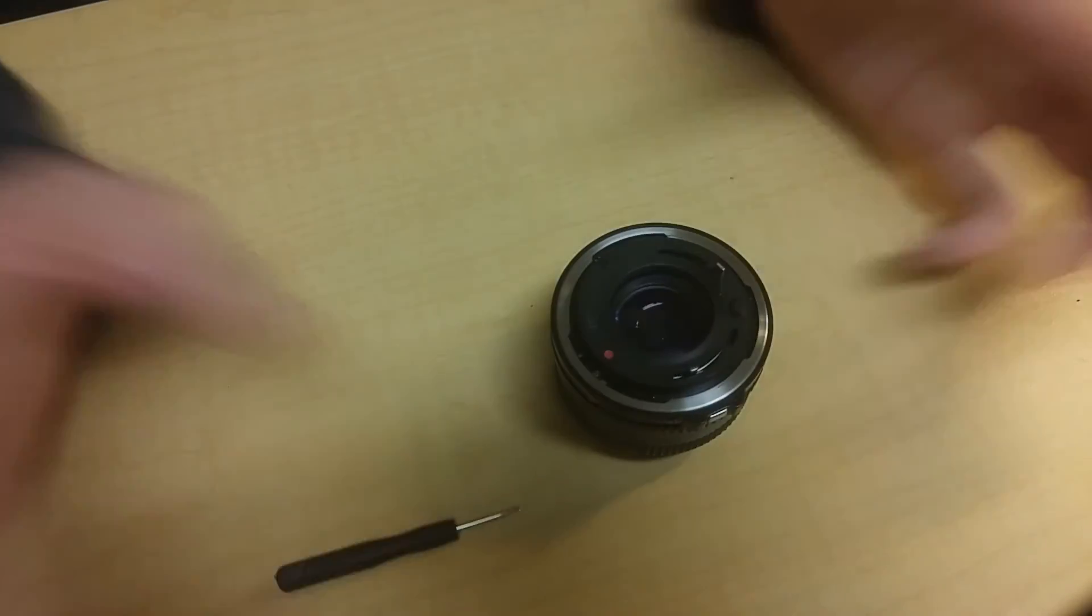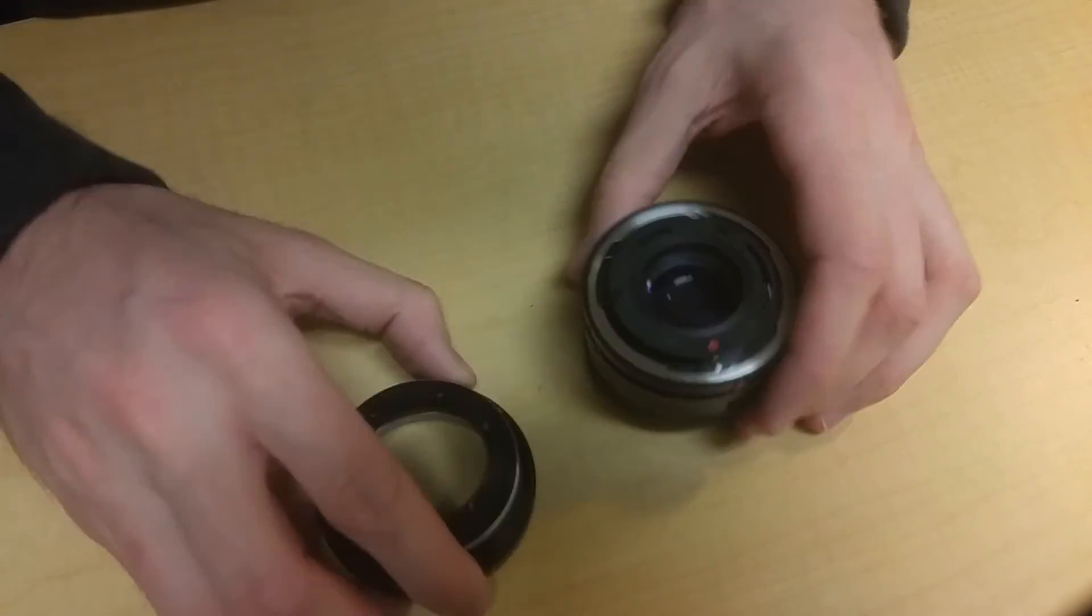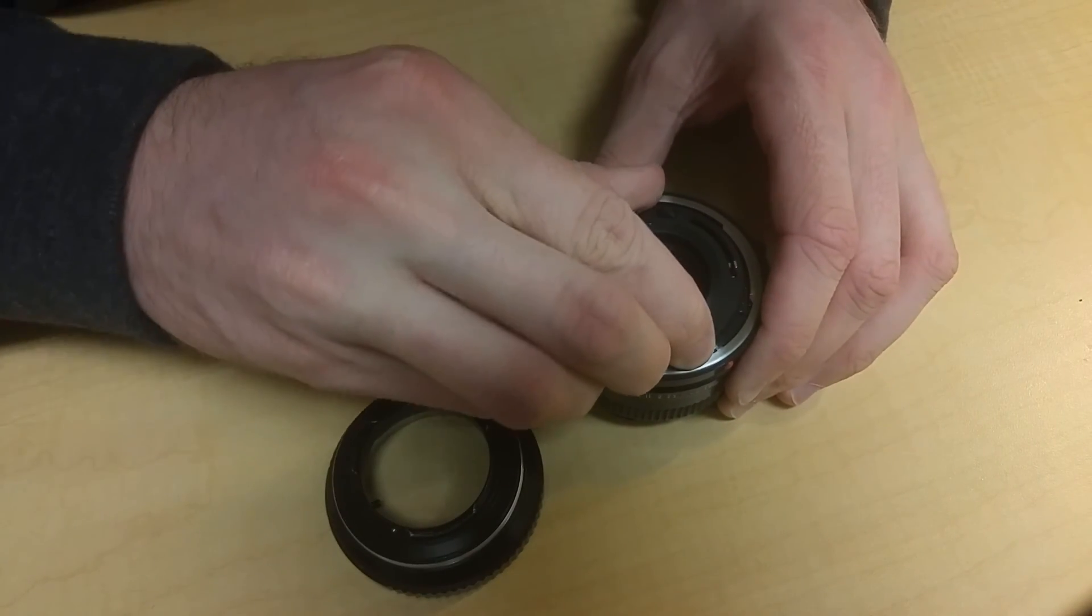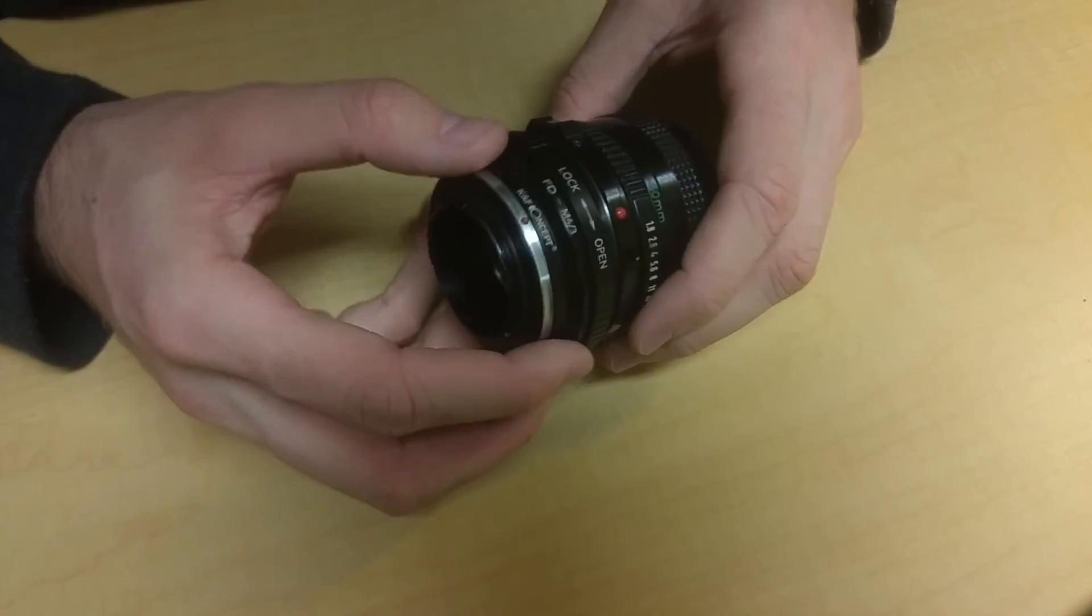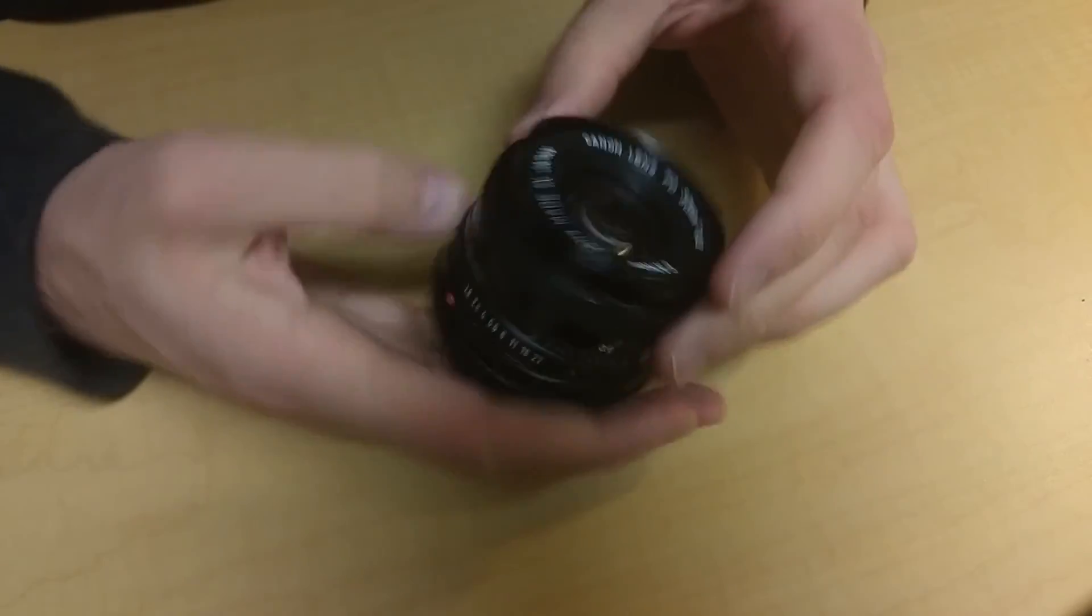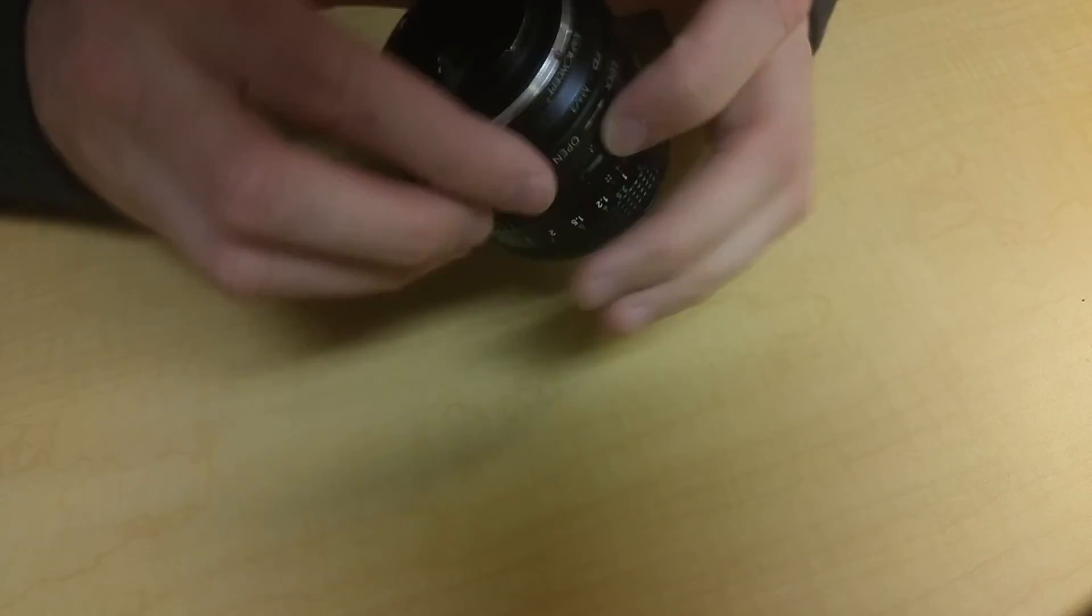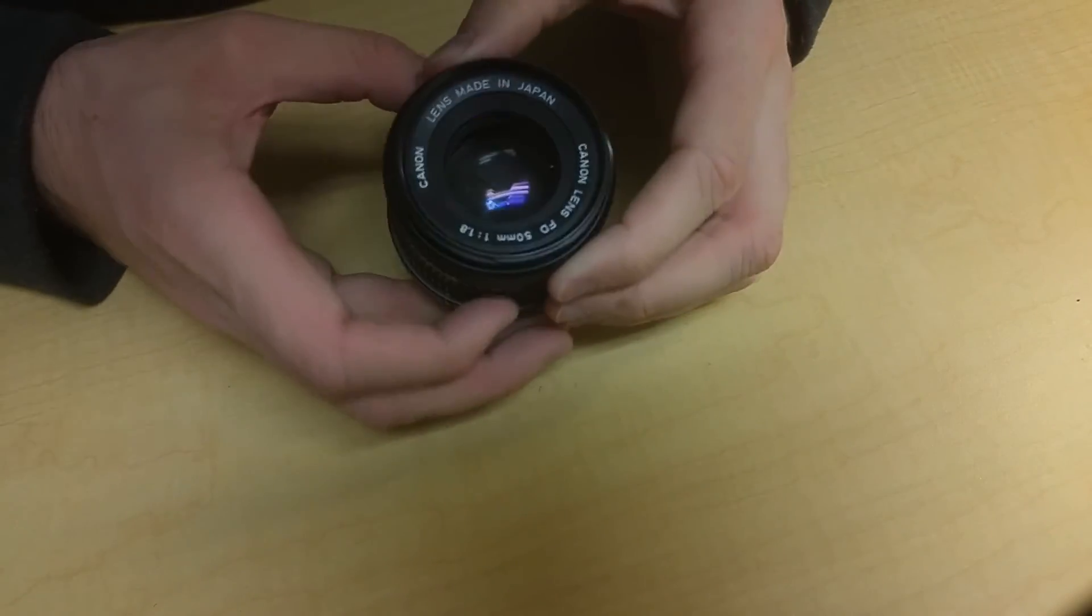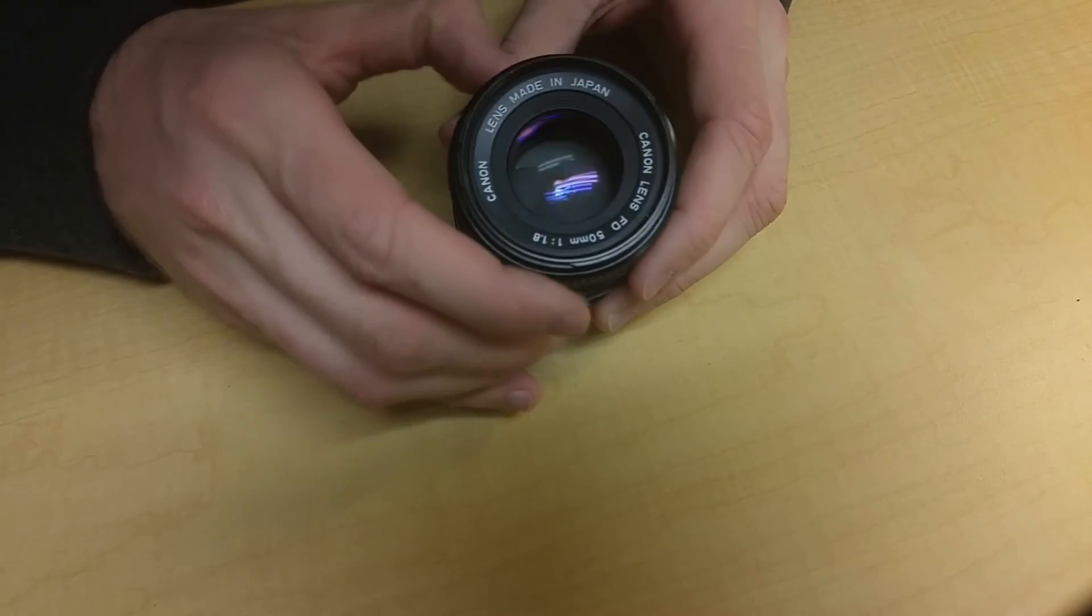Alright, that's pretty much it. I can show you—I have my lens adapter here for my camera, and pretty much you want to line these pegs up, these two pegs up, and just go ahead and you're all good. You want to unlock it first, and then there you go. That's how you do it.